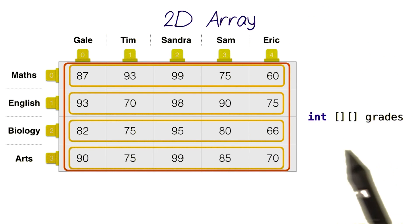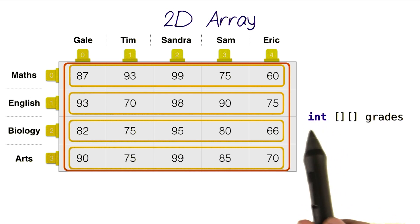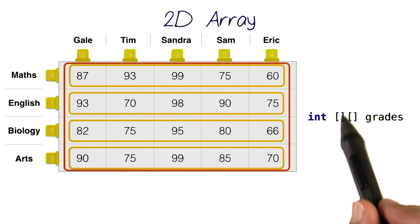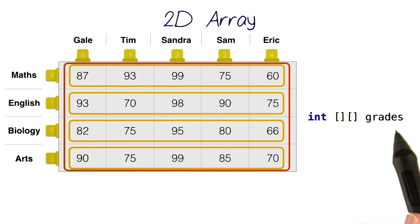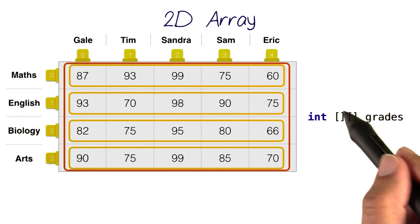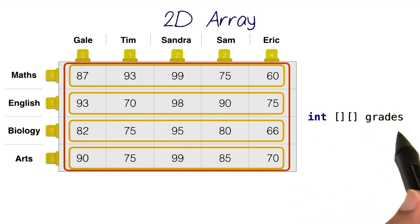To declare a two-dimensional array, you type in the type of the data that's stored inside, followed by two sets of square brackets, and then the array name. This is because we're actually creating an array of array of integers called grades.